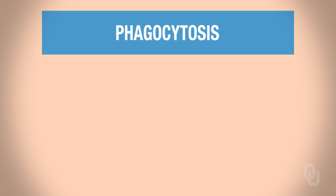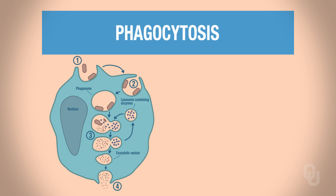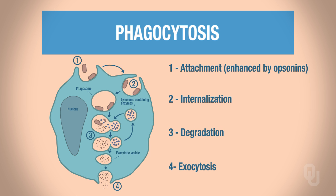Phagocytosis is a form of endocytosis. You'll need to fill in its four steps. Also look into opsonins — why are they needed and why are they important in phagocytosis?